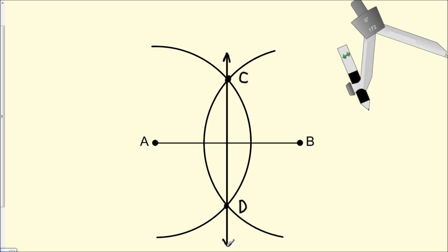Line CD is the perpendicular bisector of line segment AB. Next, we label this intersection point E.